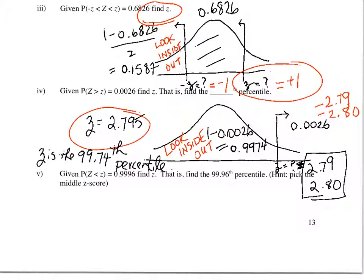This is the 99.74th percentile because 99.74% of the observations are to the left of 2.795.